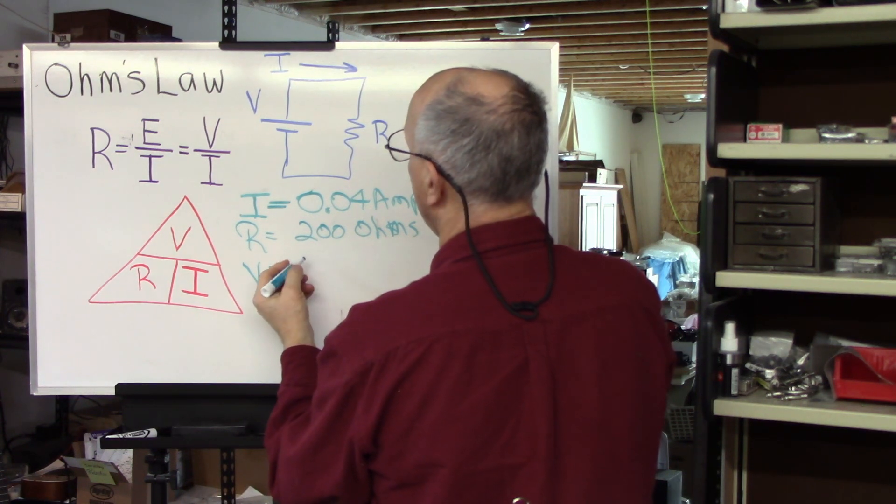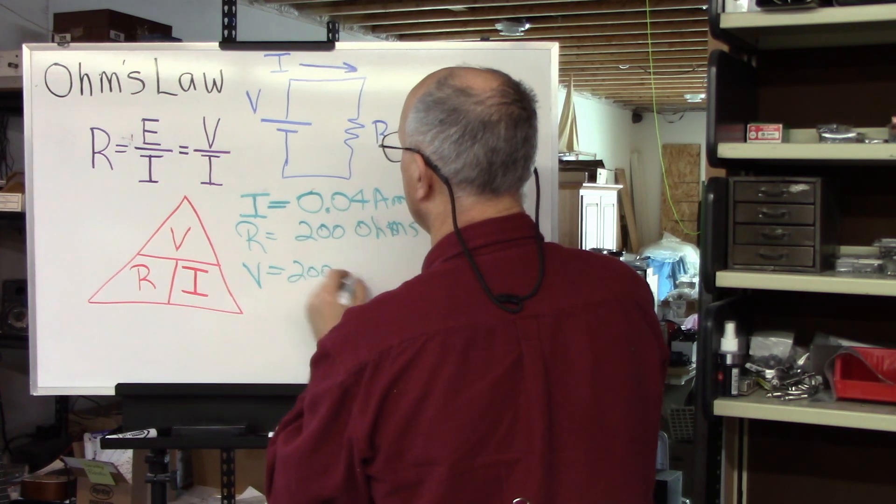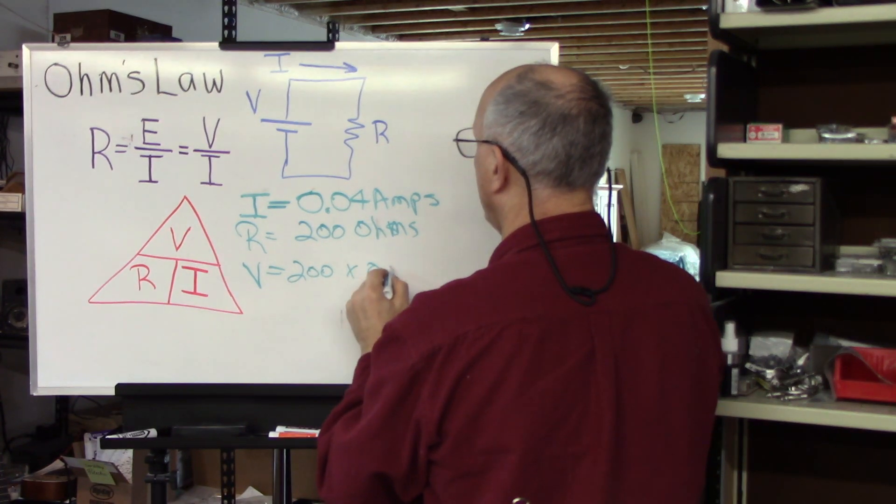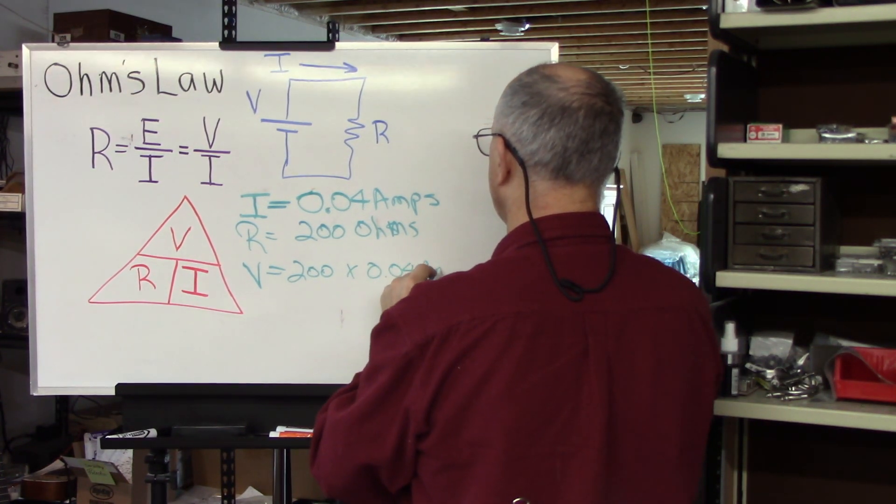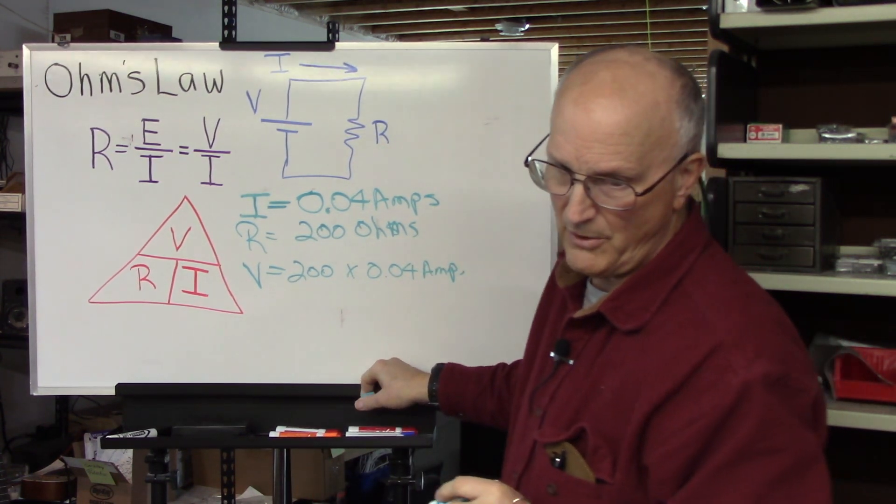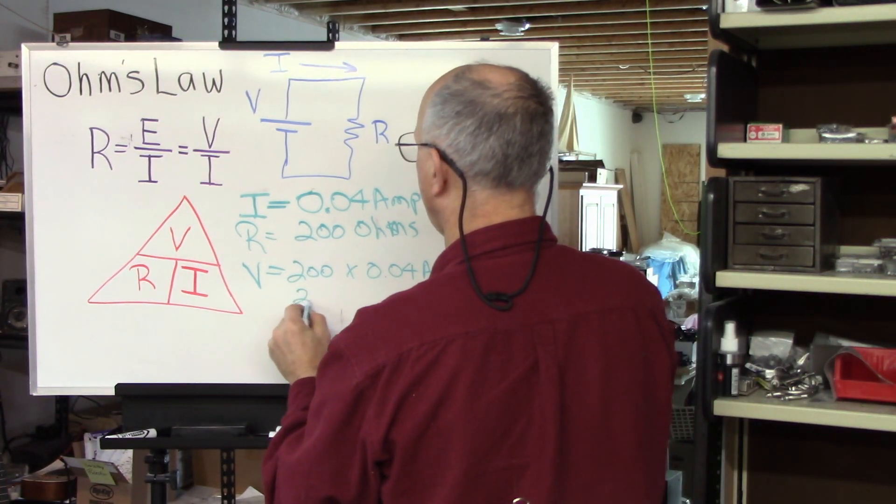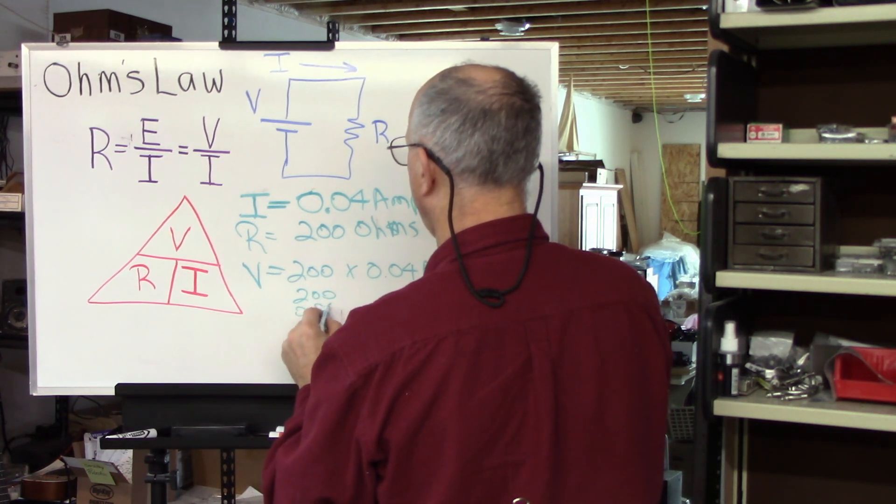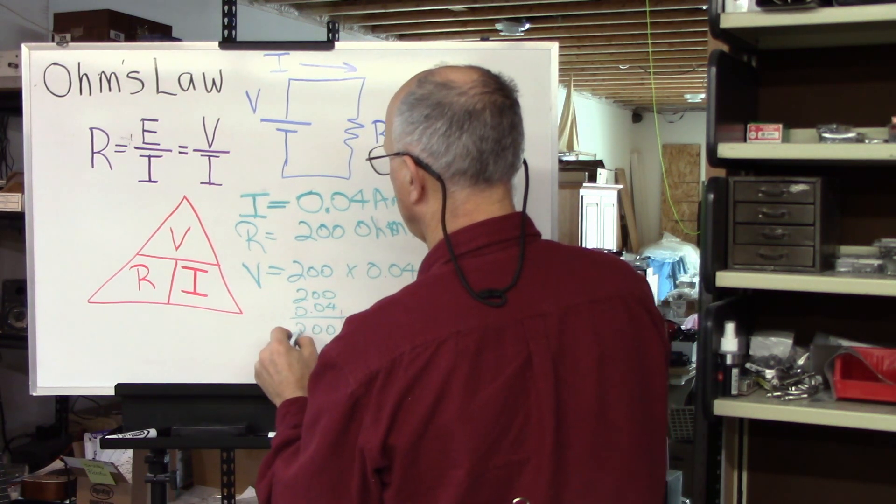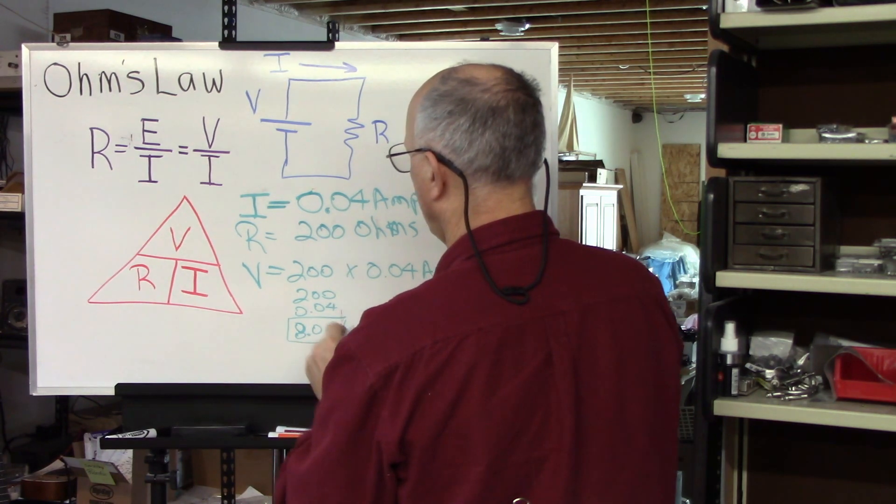The voltage would equal the resistance in ohms, which is 200, times the current in amps, which is 0.04 amps. And so the applied voltage would be 200 times this. So let's just do that math right here. 0.04 times 200 equals 8 volts.